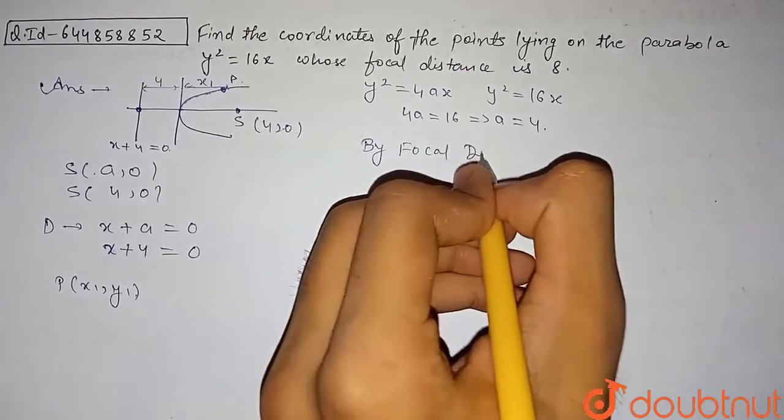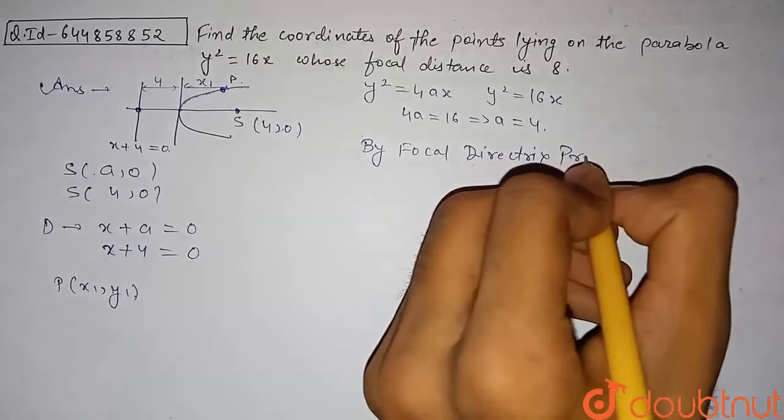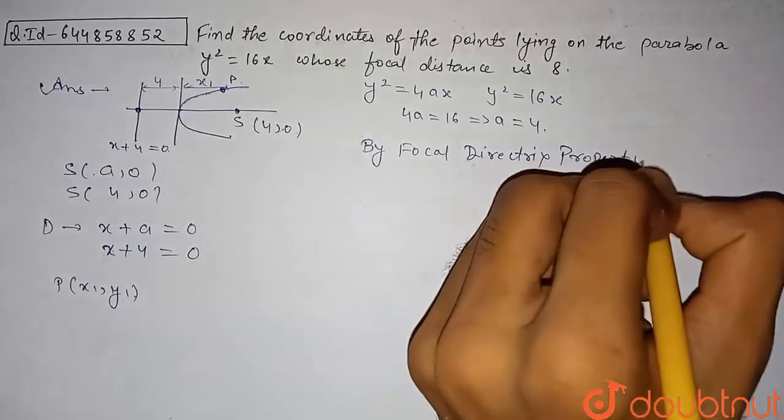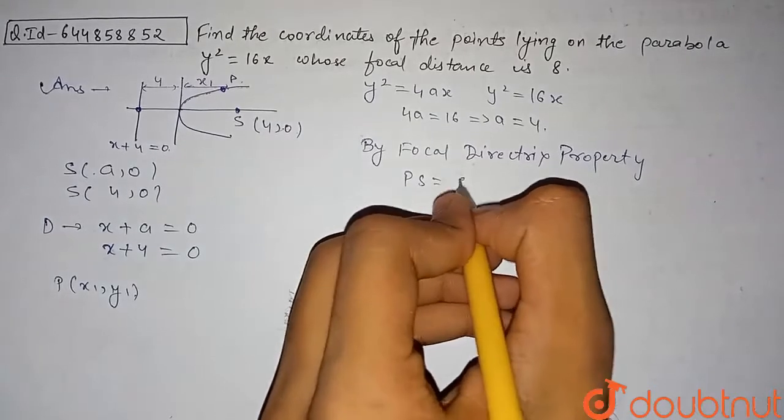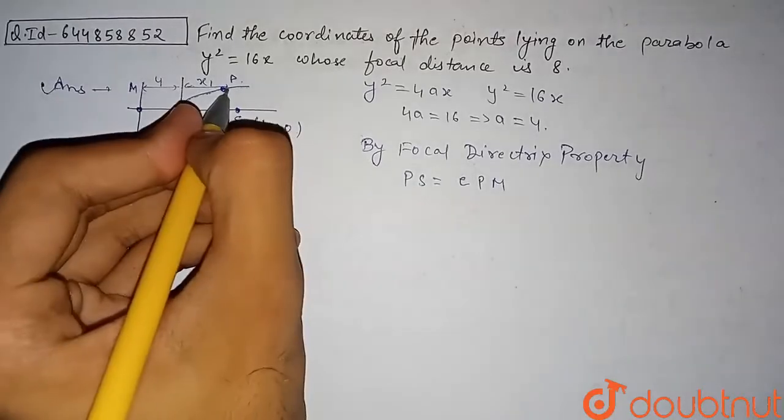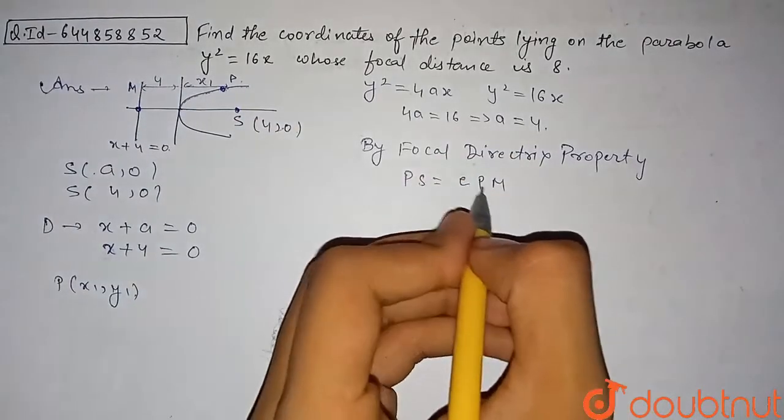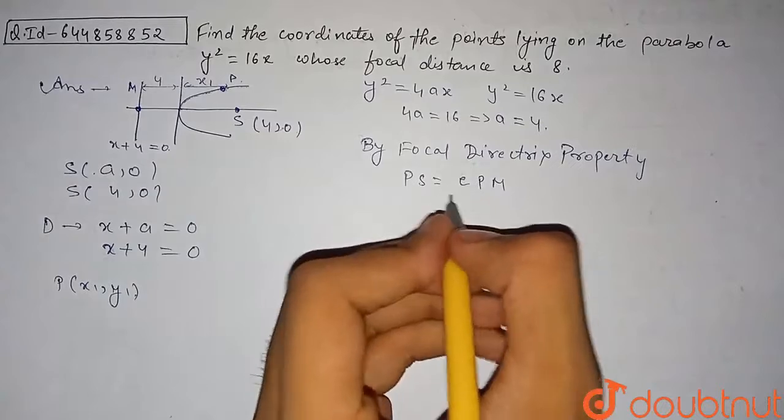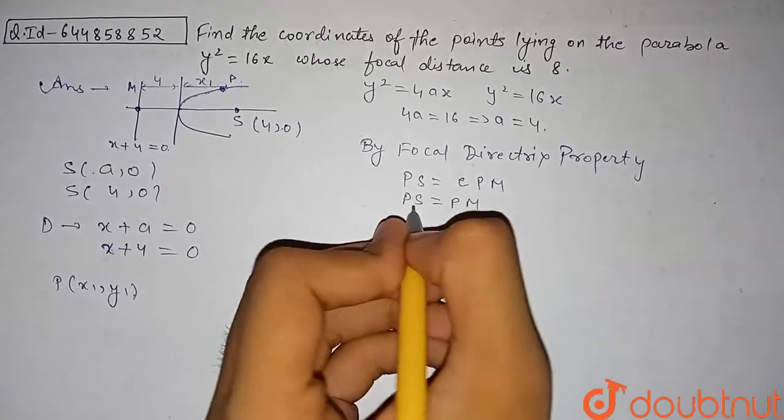By focal directrix property, PS (the focal distance) equals e times PM, where M is the foot of perpendicular from this point on the directrix. For parabola, the eccentricity e = 1, so PS = PM.